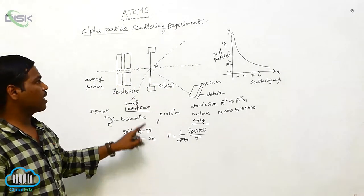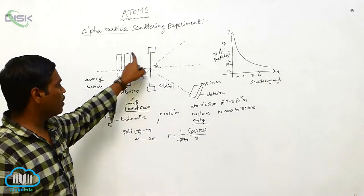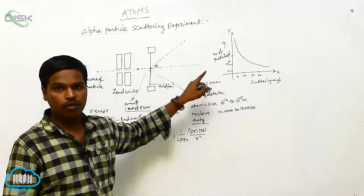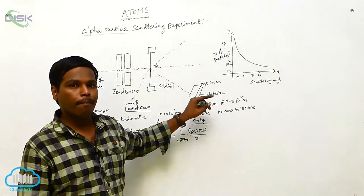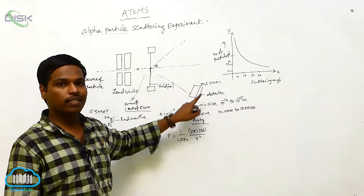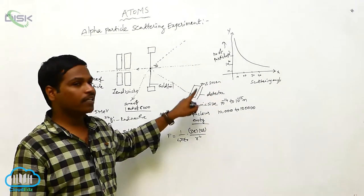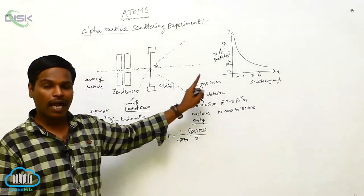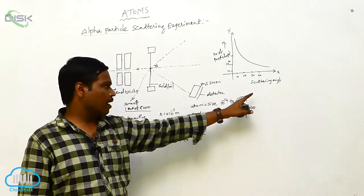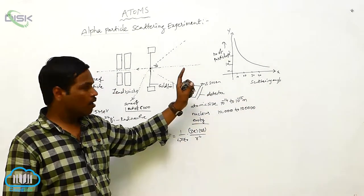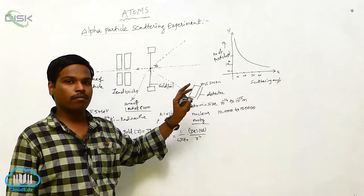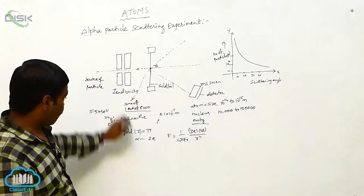This is the alpha particle scattering experiment. By this experiment, Rutherford concluded that most of the mass is concentrated at the center, that is the nucleus. Around this nucleus, the electrons are revolving like a planet. This is Rutherford's planetary atomic model.